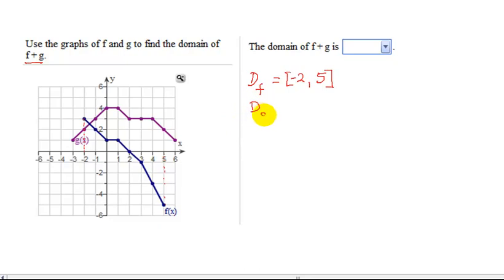What is the domain of g? Well, g starts here. What is its x value? Negative 3. G starts here. It continues all the way to this point here, right here. What's its x value? 6. So the domain of g is negative 3 to 6.